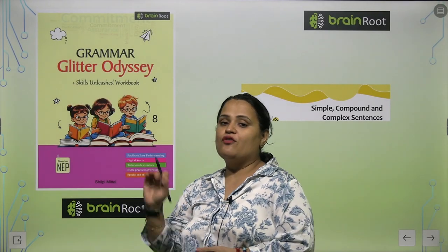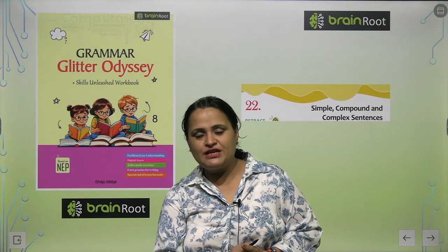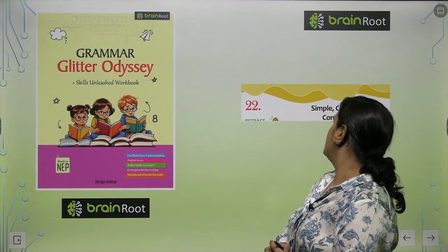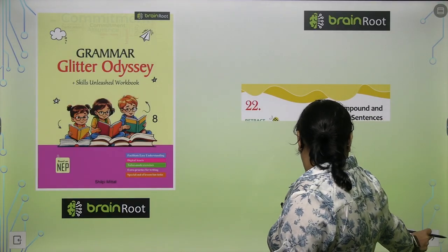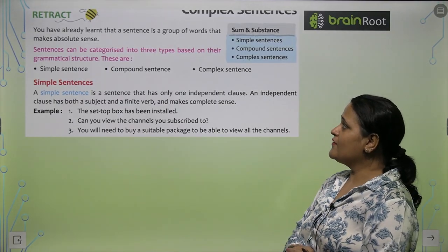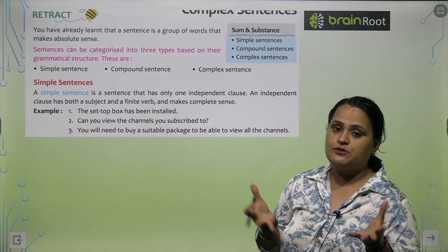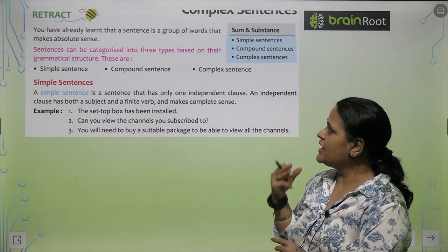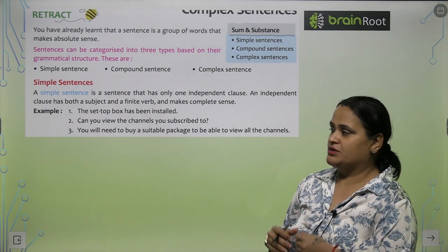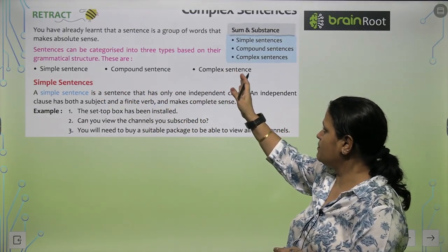So now, dear children, from your book Grammar Glitter Odyssey by Prane Root from Amit Publishing House, we have reached the 22nd chapter: Simple, Compound, and Complex Sentences. You have already learned that a sentence is a group of words that make absolute sense. Sentences can be categorized into three types based on their grammatical structure: Simple Sentences, Compound Sentences, and Complex Sentences.